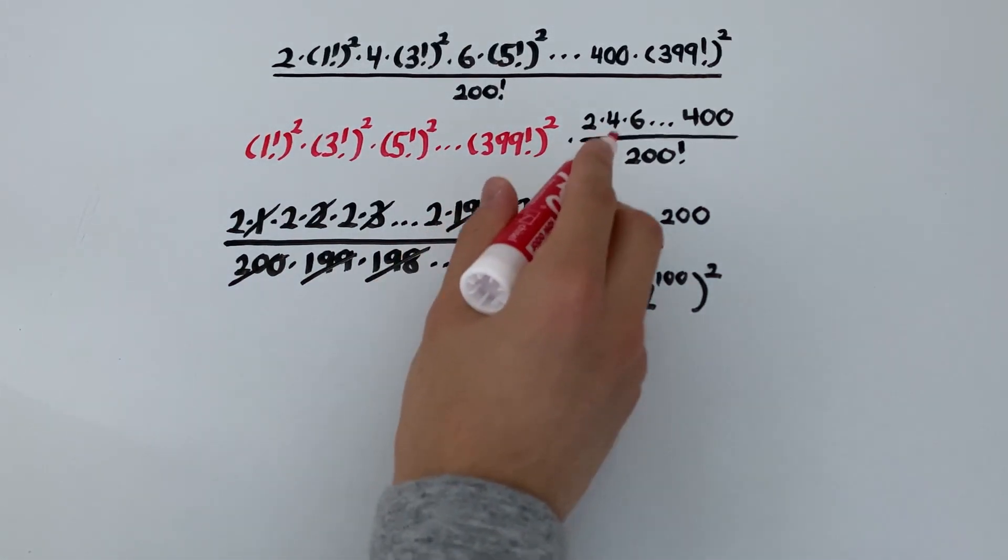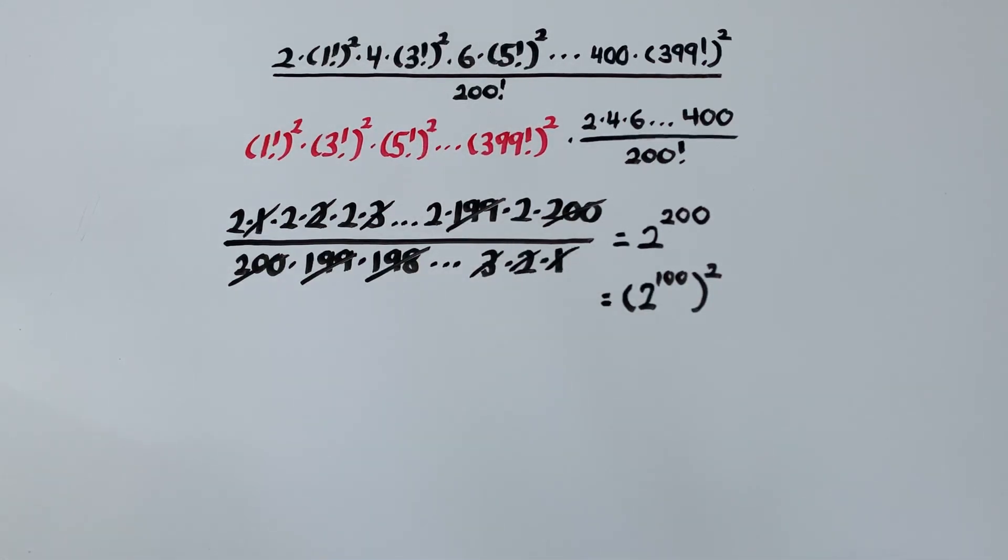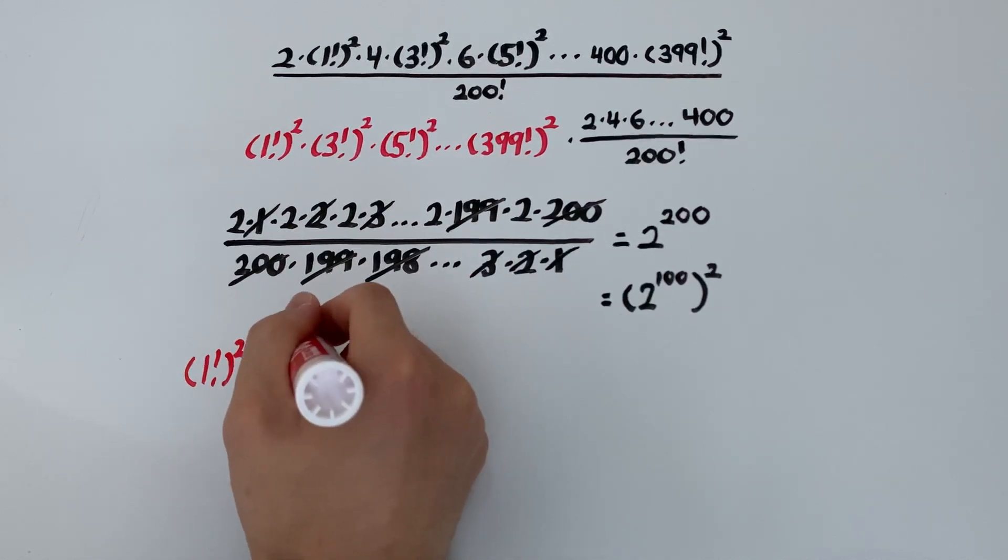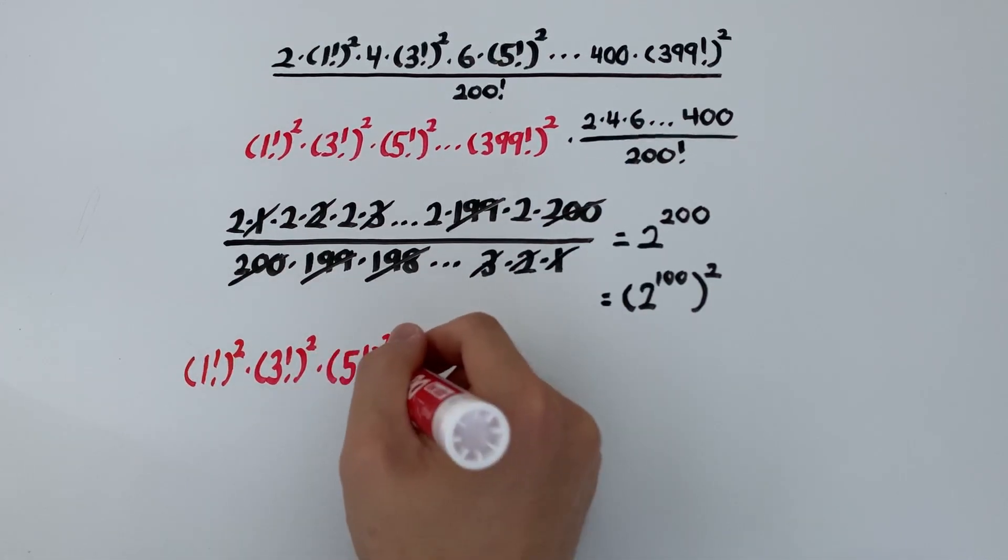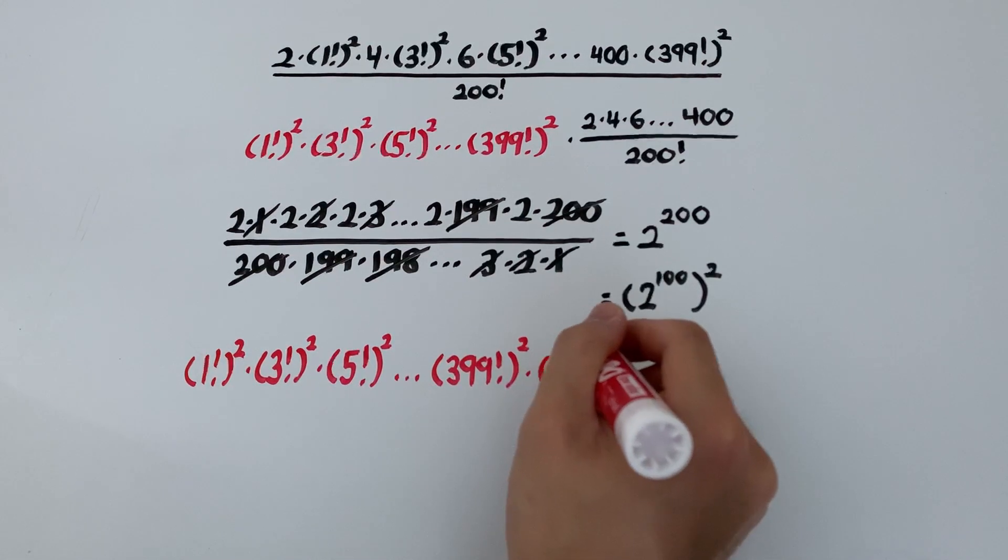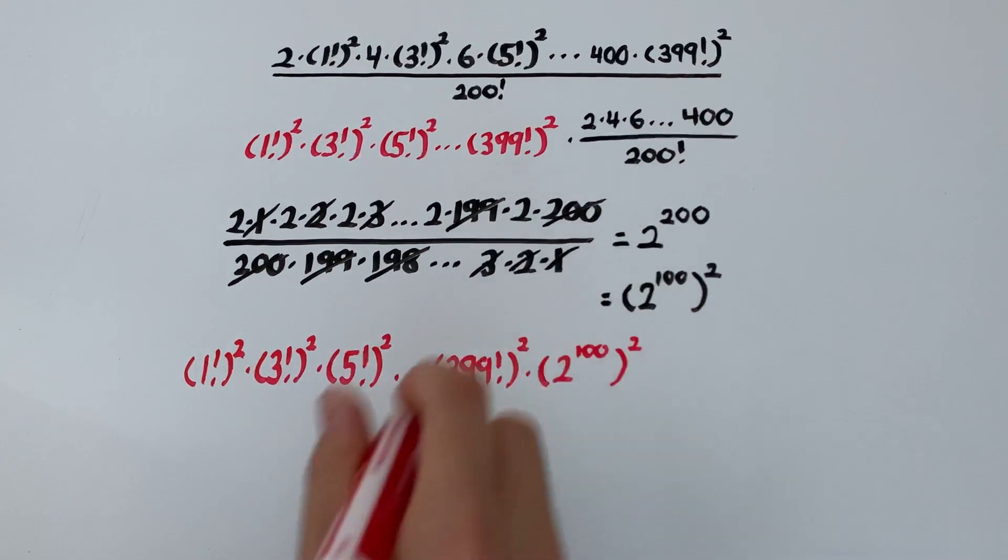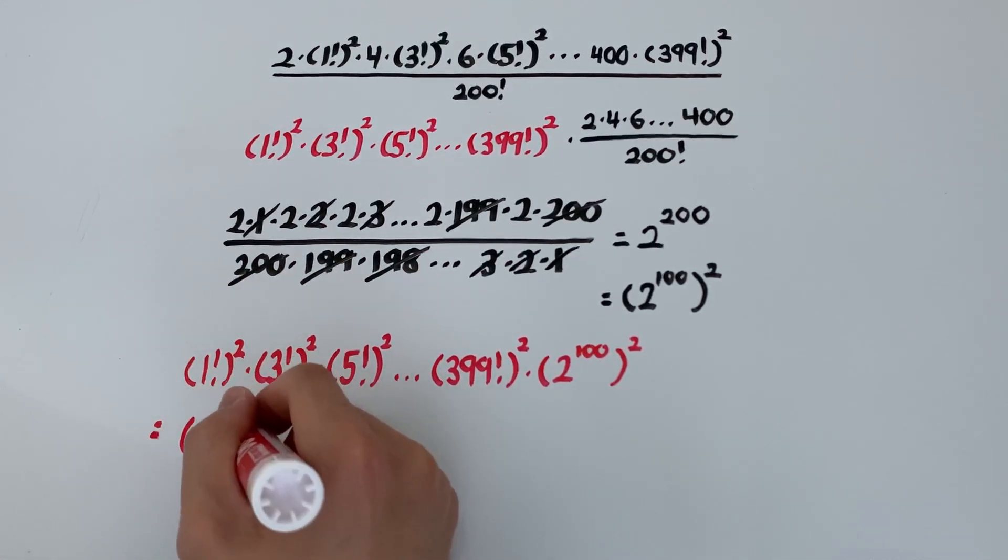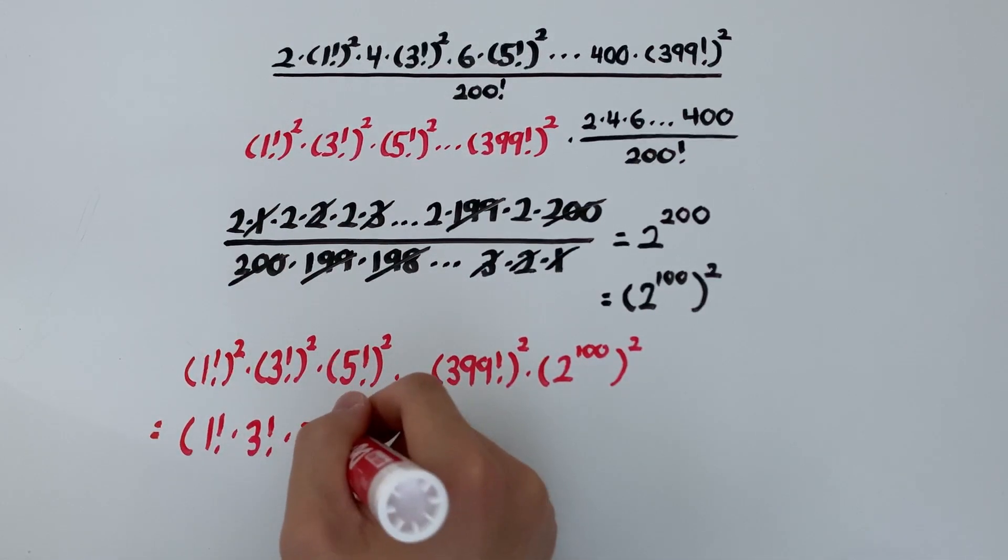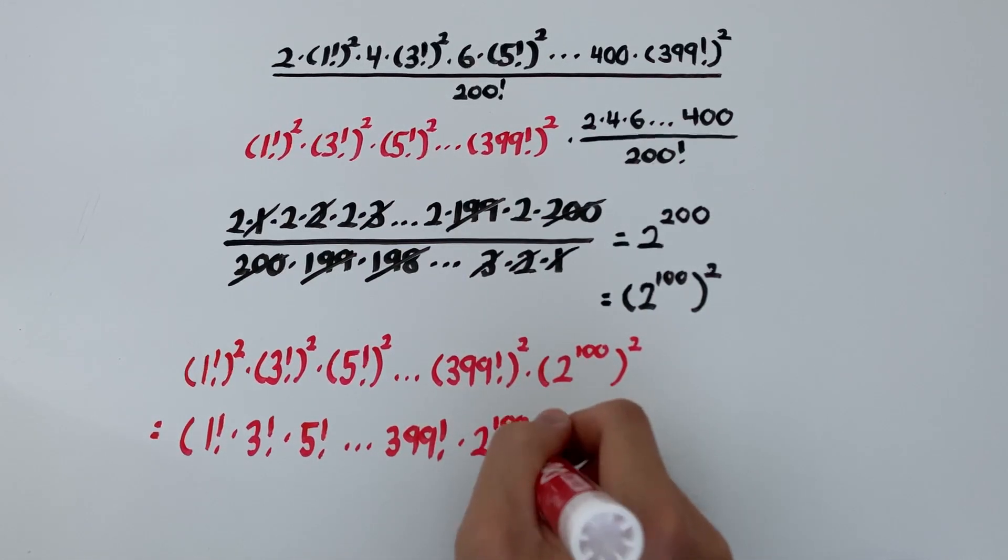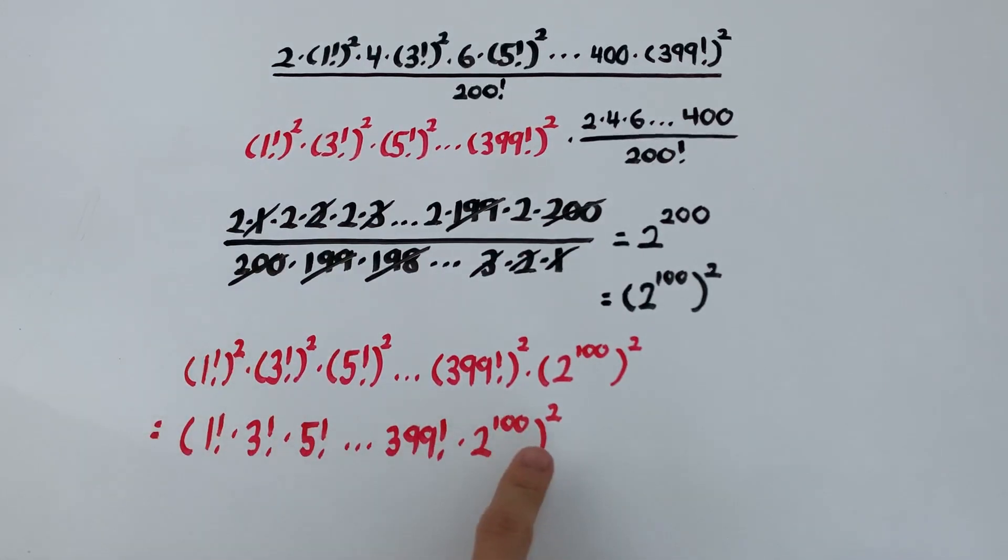This means that this part is equal to 2 to the 100 squared. So overall, our original expression from the beginning has turned into 1 factorial squared times 3 factorial squared times 5 factorial squared all the way to 399 factorial squared times 2 to the 100 squared. And all of this is equal to 1 factorial times 3 factorial times 5 factorial all the way to 399 factorial times 2 to the 100 all of this squared. And since this is what we wanted to show we have proved that our original question at the beginning is a perfect square.